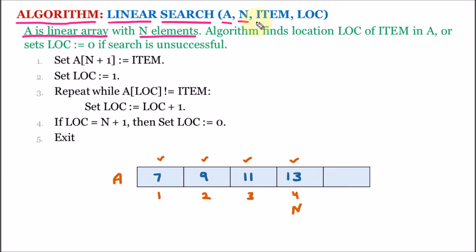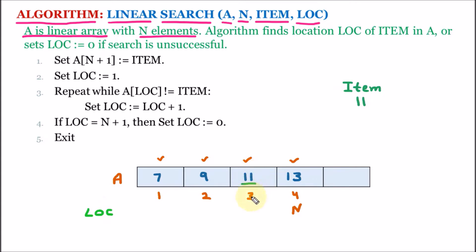The next variable we have is item. Let us suppose we want to search 11 inside this array. So here 11 is the item. The next one is LOC. LOC is the location of the item, which is 11, that we want to search. In that case, the algorithm should return the location as 3.